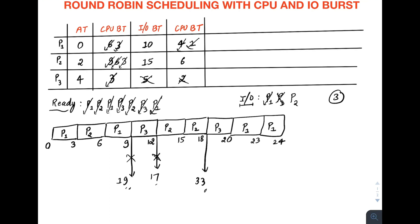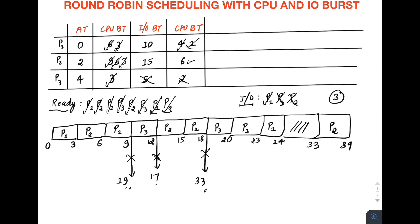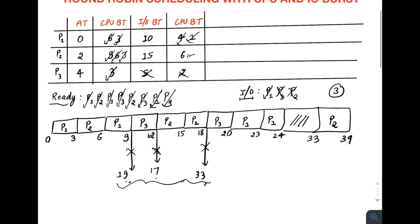P2 is the only process remaining. It completes its I/O at time 33, so from 24 to 33 the CPU remains idle. At time 33 P2 enters the ready queue with six units of CPU burst remaining and runs from 33 to 39, terminating at 39. All processes have now terminated and the Gantt chart is complete.